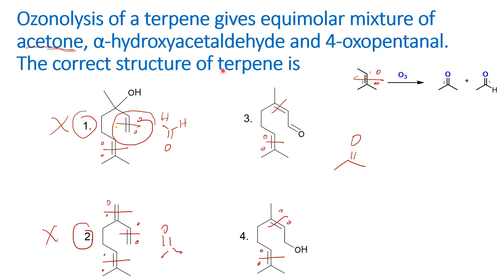The remaining two options are three and four. For options three and four, we need to look for alpha-hydroxyacetaldehyde and 4-oxopentanol. Even before fully solving the question, you can see that only option four contains a hydroxy group in the structure, whereas option three does not. But we will solve the problem to confirm the answer.